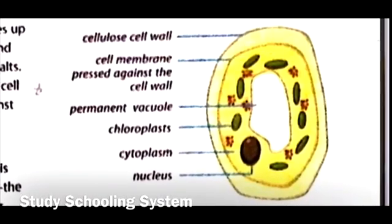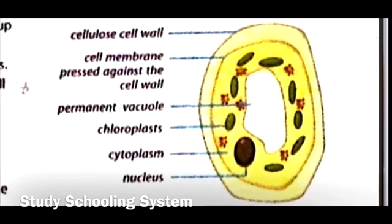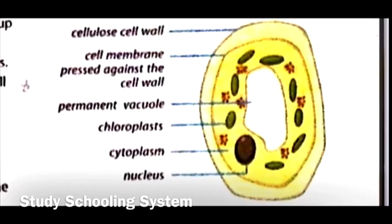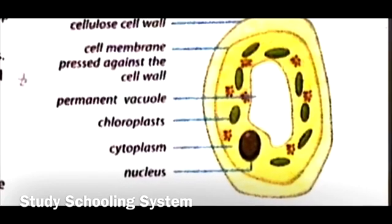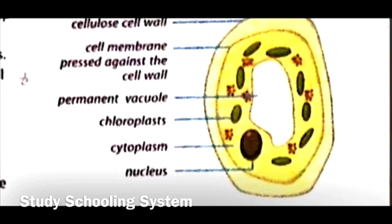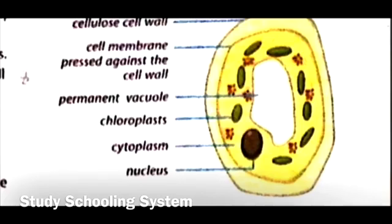So looking at the plant cell picture: outside the cell membrane there is another layer called the cell wall, made up of cellulose, and it is impermeable — nothing can go inside or outside through it. Then there's a cell membrane pressed up against the cell wall. You can see a permanent vacuole shown in white. A plant cell also has a nucleus, cytoplasm, and chloroplasts where chlorophyll is found — used for photosynthesis, which is making food, only in plants.